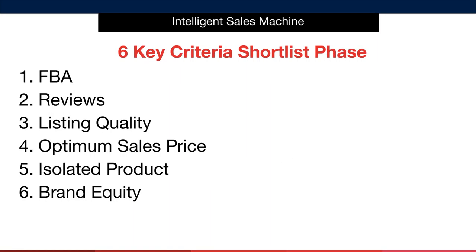Before we dive into scoring the products and developing our league table, it's important to introduce the six key criteria you'll be using to create your overall product score. Firstly we have FBA, which means fulfillment by Amazon. The second criteria is product reviews. Next we have what we call listing quality. Then we have the optimum sales price, followed by determining whether or not a product is isolated. The final criteria is brand equity.